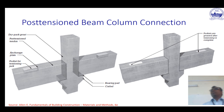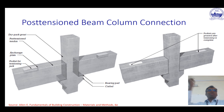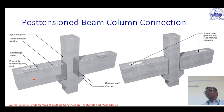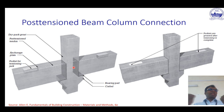Now we have seen column base to column connections; here we are going to see a beam-column connection. You have a corbel. Some rods are given for continuity and after placing the beam, we fill up the pockets. Typically a post-tensioning cable is used for this connection — the beam and column are post-tensioned from both sides, forcing them to behave as one. This is the post-tensioned beam-column connection.